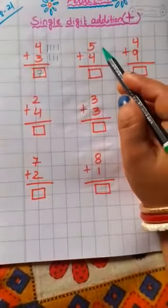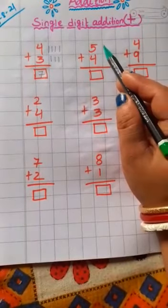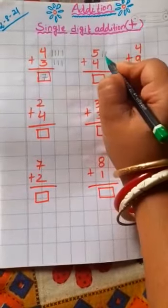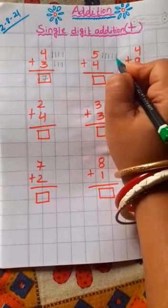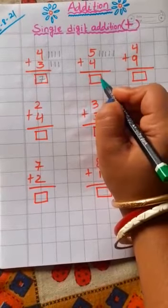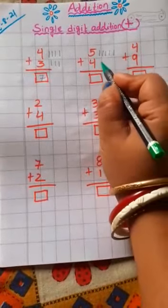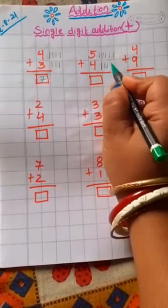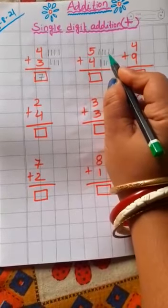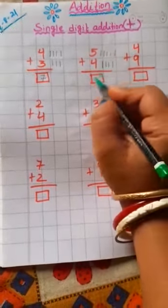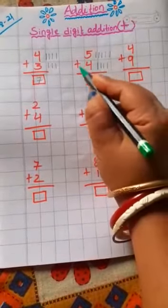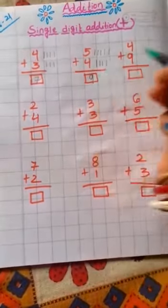Now next number. Children, the first number is 5, so you draw here 5 lines: 1, 2, 3, 4, 5. After that, the number below is 4, so you draw here 4 lines: 1, 2, 3, 4. Now children, count all the lines together: 1, 2, 3, 4, 5, 6, 7, 8, 9. Your answer is 9. And you write here 9. 5 plus 4 is equal to 9.